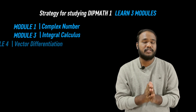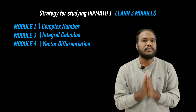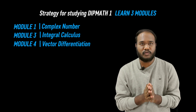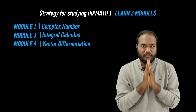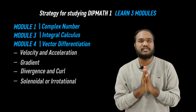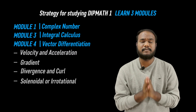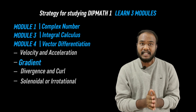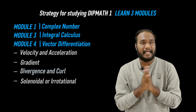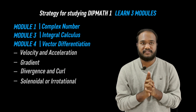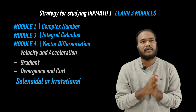After Module 3, you can attend Module 4: vector differentiation. All you need to know to score 20 marks in this module is a little bit of differentiation. In the fourth module, they will only ask questions on finding velocity and acceleration from a given displacement vector, finding the gradient of a scalar field, finding the divergence and curl of a vector field, and determining if the vector field is solenoidal or irrotational.